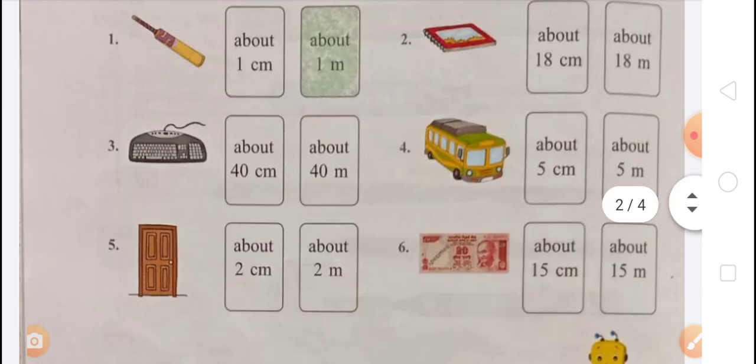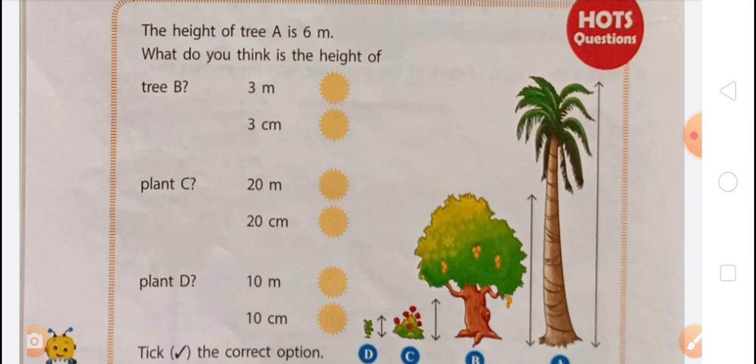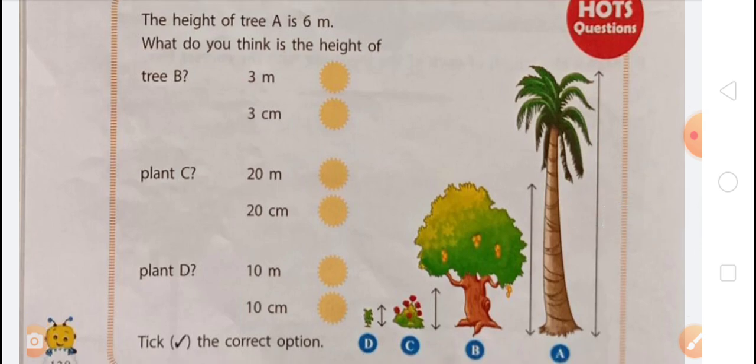Now let's look at the next question on screen. The height of tree A is 6 meters. Tree B is half the height of tree A, so the height of tree B will be 3 meters.